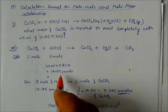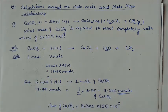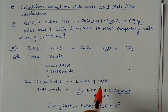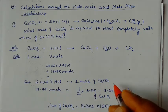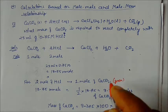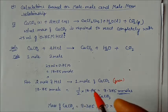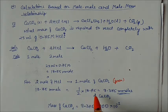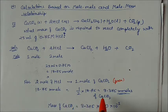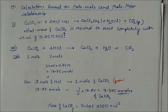HCl is given as 25 mL volume and 0.75 M concentration. Multiplying volume × molarity = 18.75 millimoles of HCl. From the balanced equation, 2 moles HCl requires 1 mole CaCO₃. For 18.75 millimoles of HCl: CaCO₃ = (1/2) × 18.75 = 9.375 millimoles of CaCO₃.